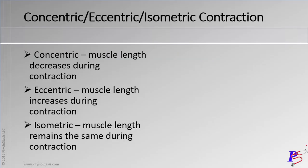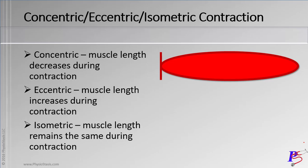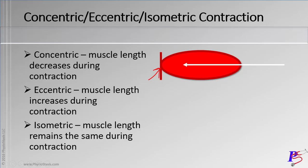First, we're going to talk about concentric contraction. With concentric contraction, we have here the muscle, which is represented by the shape of the oval, and it's attached here to a fixed point, such as a joint. During the contraction, the muscle should be moving in the direction of the white arrow, and as it does, the length decreases. This is called a concentric contraction.